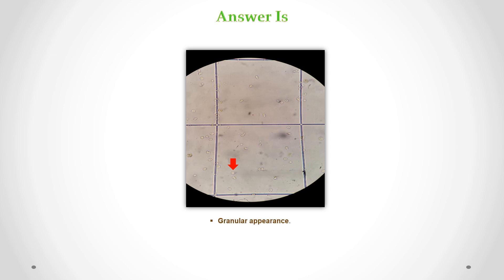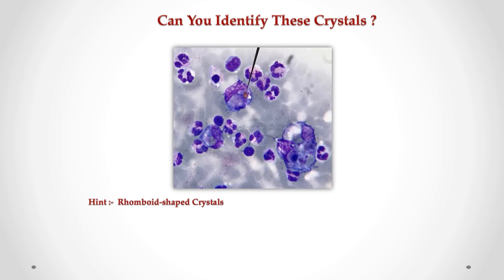Correct answer is white blood cells. We can see a granular appearance. Can you identify these crystals?